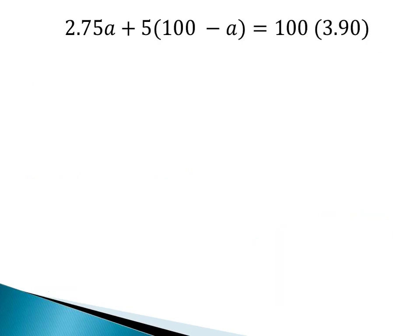Now that we've got that, let's go ahead and solve this. We're going to distribute the 5 into the 100 and the negative A, and then multiply these two pieces on the right-hand side. So 2.75A comes along for the ride. 5 times 100 is 500. 5 times negative A, negative 5A. 100 times $3.90, $390.